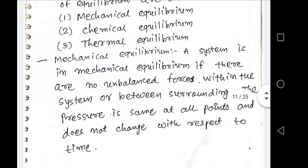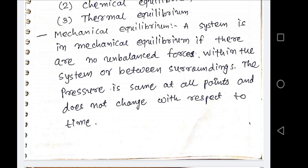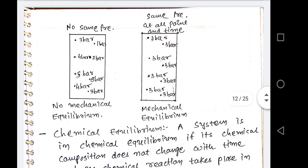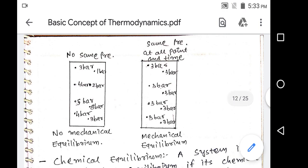Mechanical equilibrium: a system is in mechanical equilibrium if there is no unbalanced force inside the system, meaning there is no chance of change in pressure or other mechanical properties. In the diagram, the left-hand side shows different pressures at each point — 3 bar, 1 bar, 4 bar, 2 bar, 5 bar — so it is not in mechanical equilibrium. On the right-hand side, every point has the same pressure of 3 bar, so that system is in mechanical equilibrium.